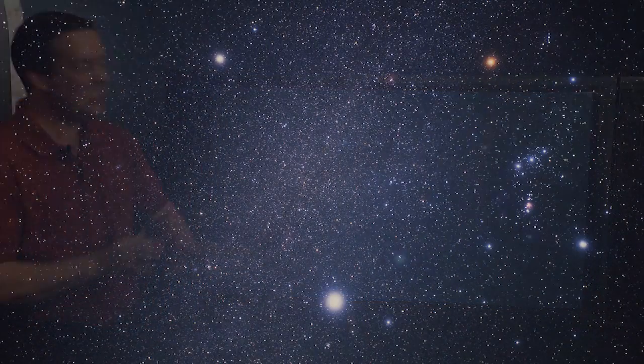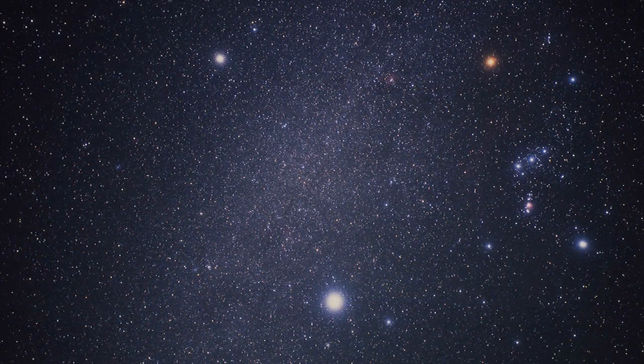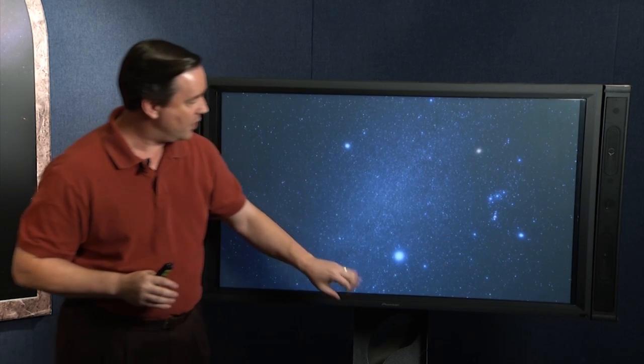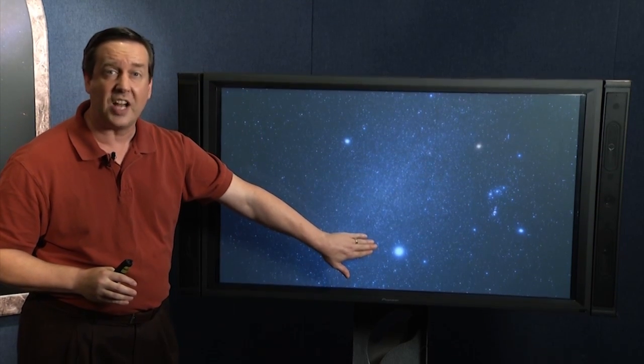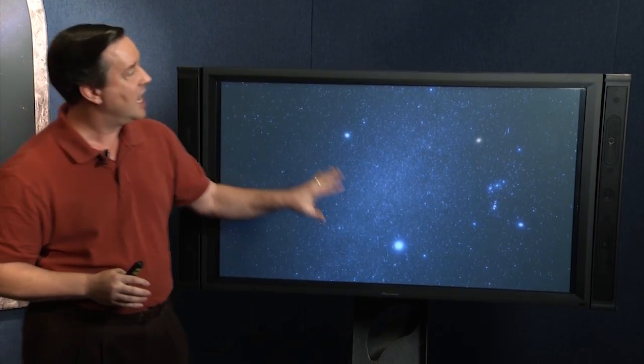This, as you may recognize, is the constellation of Orion. And this is a very rich field in the sky because we've got not only Orion, we've got the brightest star in the night sky, Sirius, we've got Procyon, up over here you've got Taurus, you've got amazing things going on in this region of the sky.